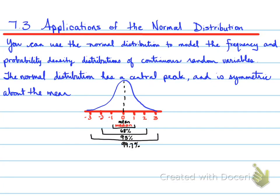7.3: Applications of the Normal Distribution. You can use the normal distribution to model the frequency and probability density distributions of continuous random variables. The normal distribution has a central peak and is symmetric about the mean.